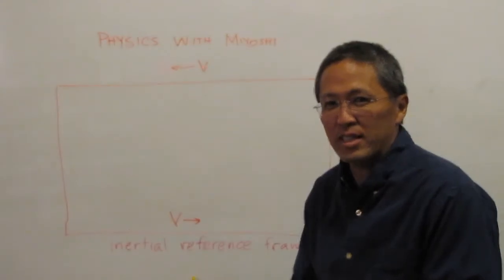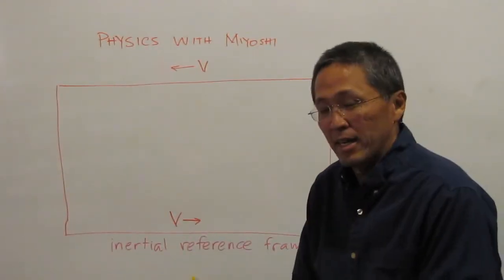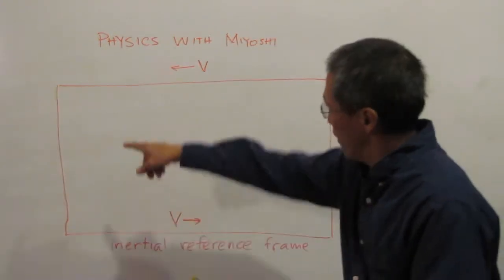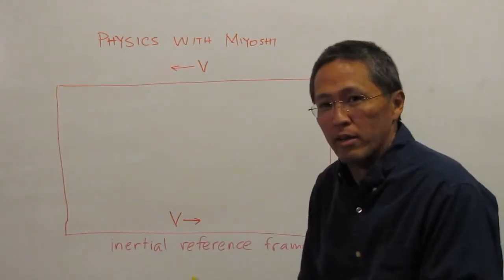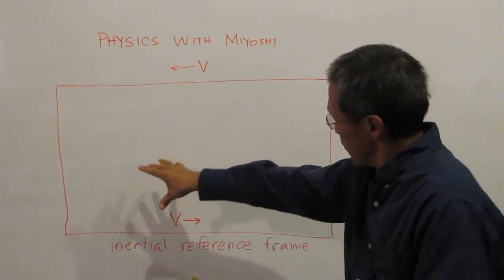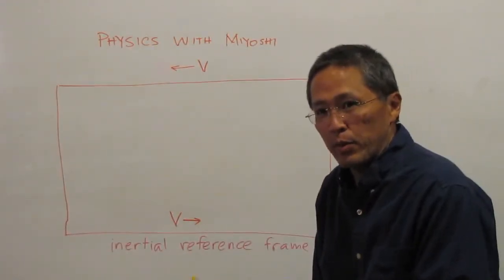Welcome back to Physics with Miyoshi. Today we're going to talk about inertial reference frames. We have our little magic square here. If I was a special effects guy and could put a little picture in there moving, we would be seeing a row of cars going by at constant velocity.